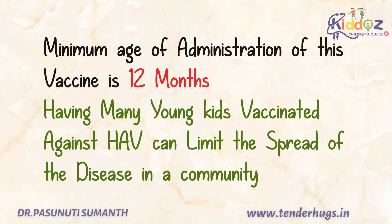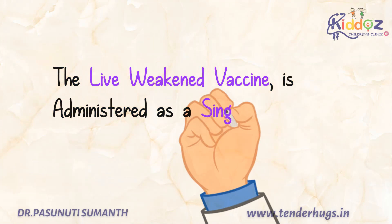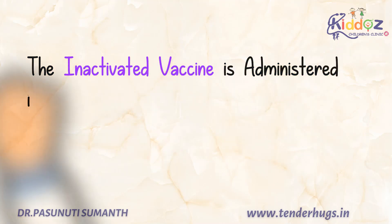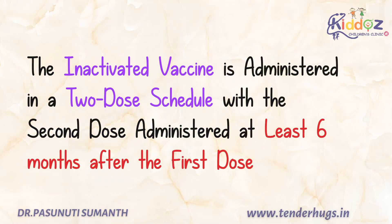The minimum age for administration of this vaccine is 12 months. Having many young kids vaccinated against hepatitis A can limit the spread of the disease in a community. The live vaccine is administered as a single-dose vaccine after the age of 12 months. The inactivated vaccine is administered in a two-dose schedule, with the second dose administered at least six months after the first dose.